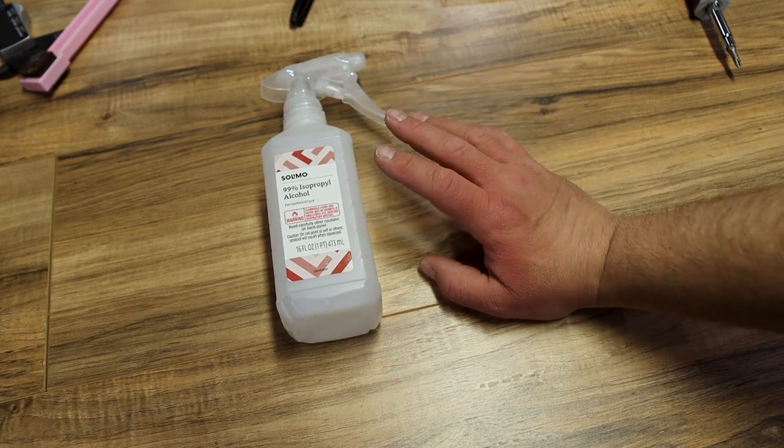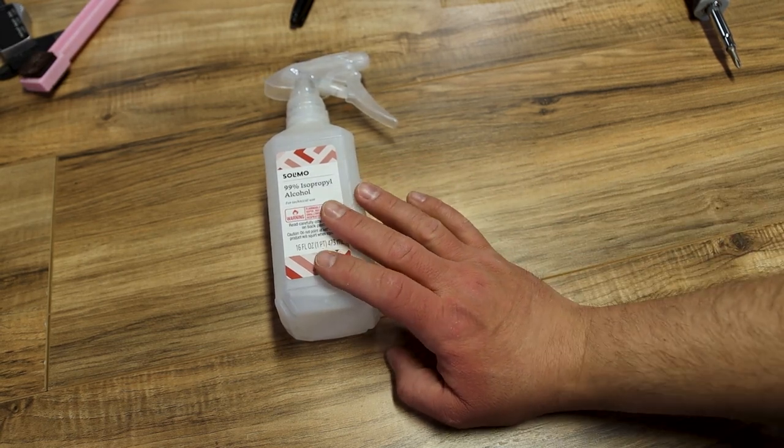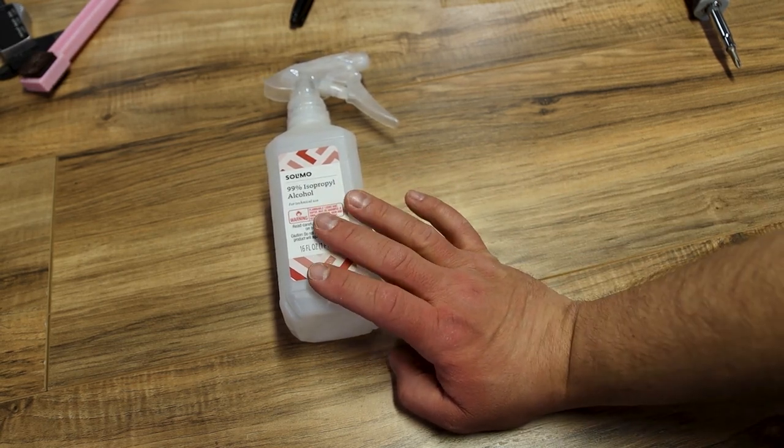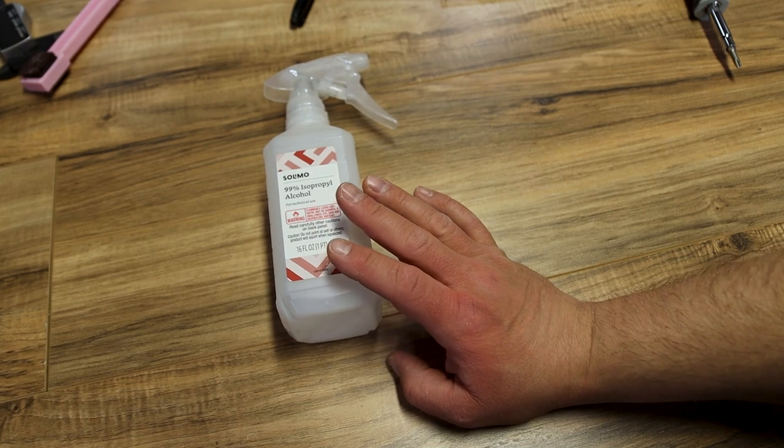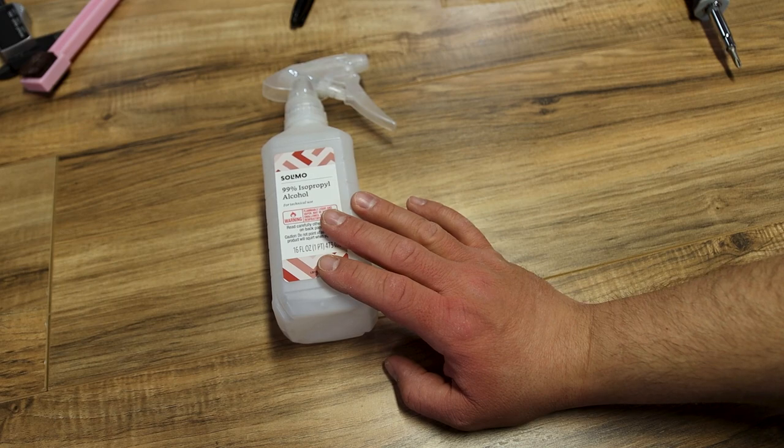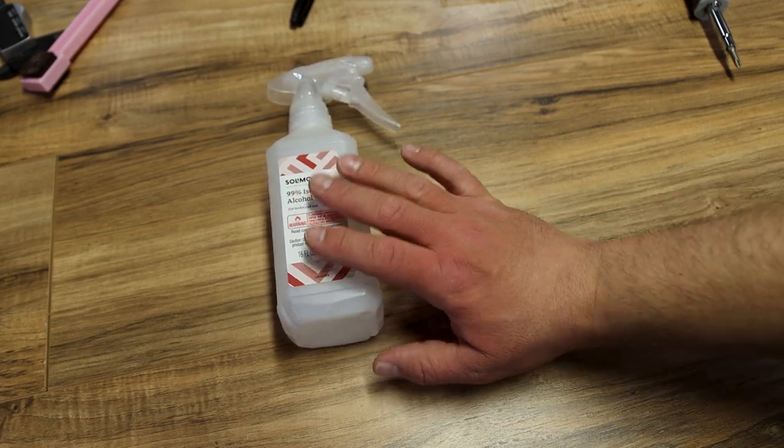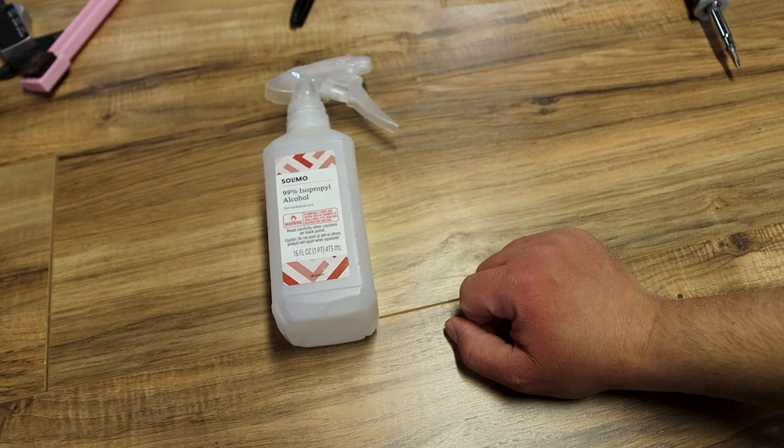Wipe it down with a paper towel. That's something else you can use is a paper towel or a microfiber and clean your bed off with this. Now if you have a removable bed you can use soap and water in a sink. You could use Windex. There's a lot of different things you could use but I really prefer the 99% isopropyl alcohol.